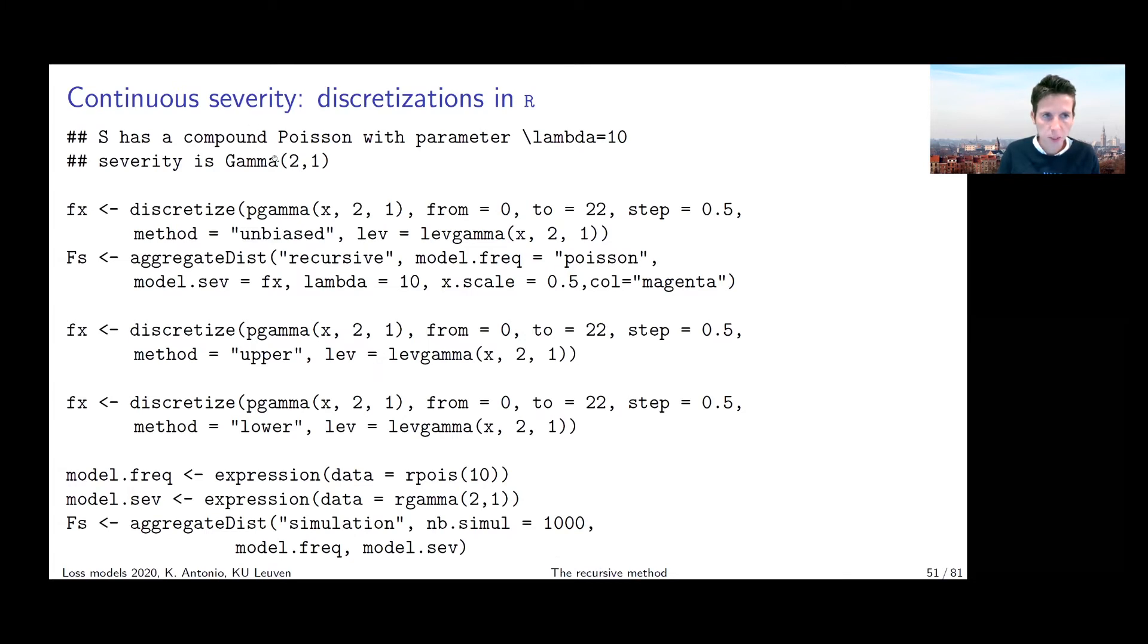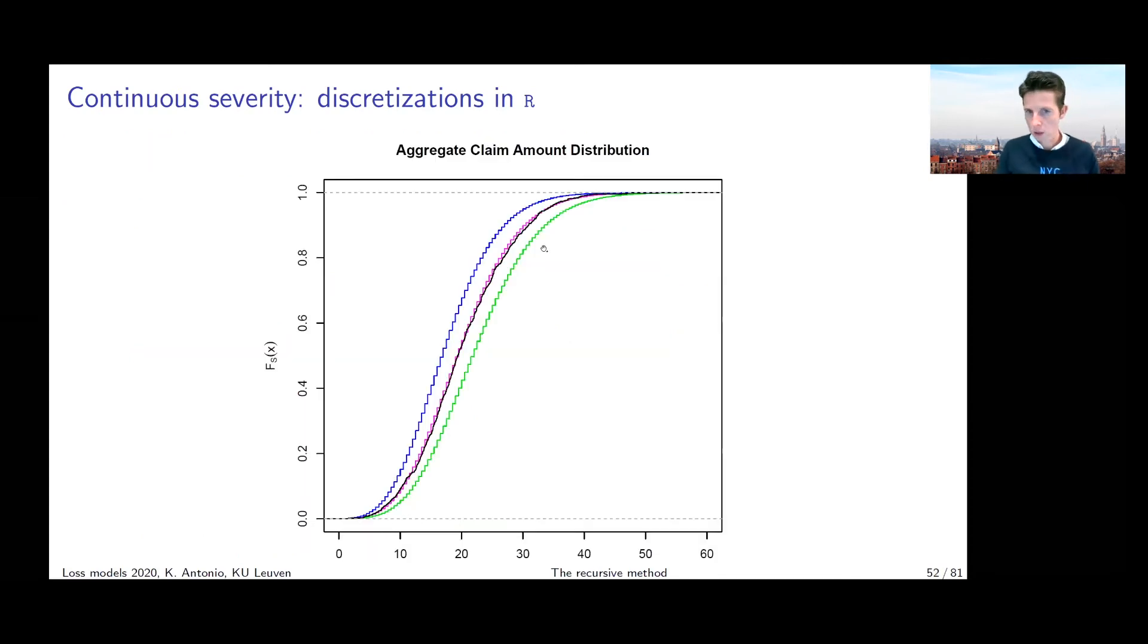So if I'm now going to look at S being a compound sum with parameter lambda = 10, and I use for the severity distribution a gamma with certain parameters, then I can look at the aggregate distribution of S. I can look at it either by running simulations or I can look at this distribution of S by running the Panjer recursion where I'm going to use a certain discretized version of my gamma distribution.